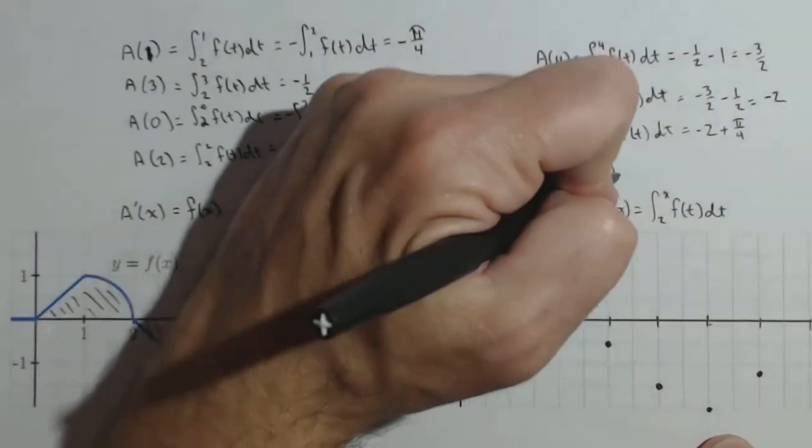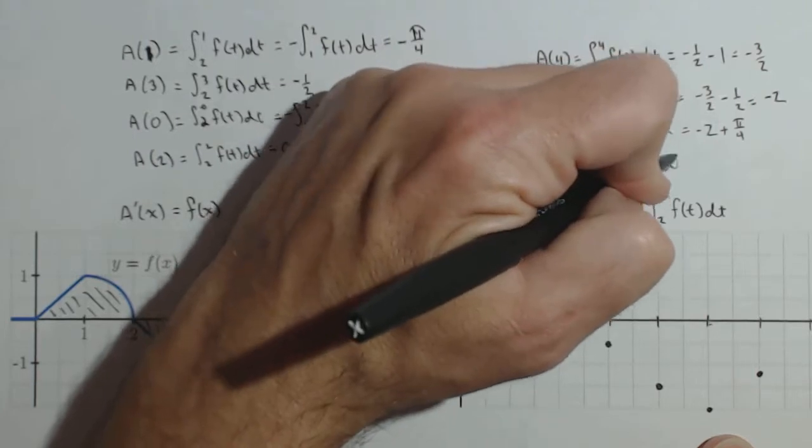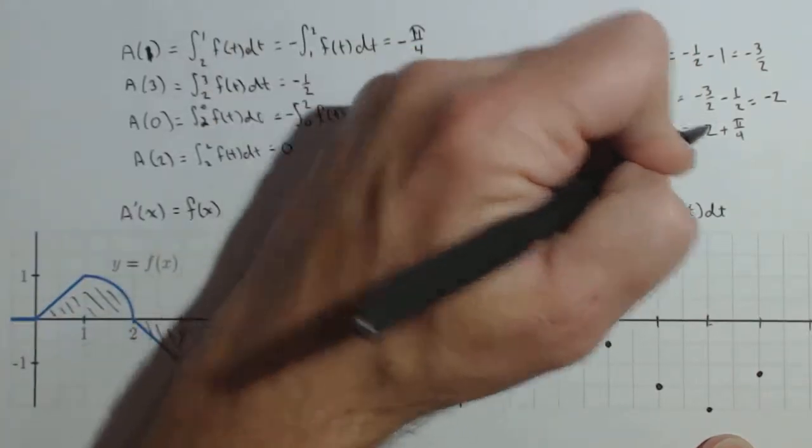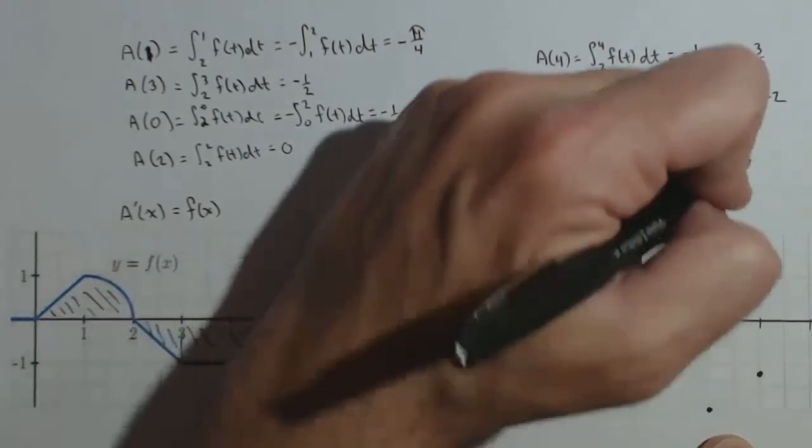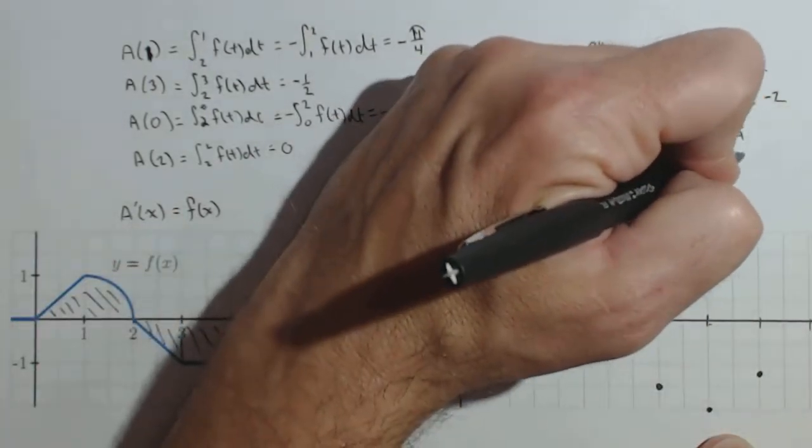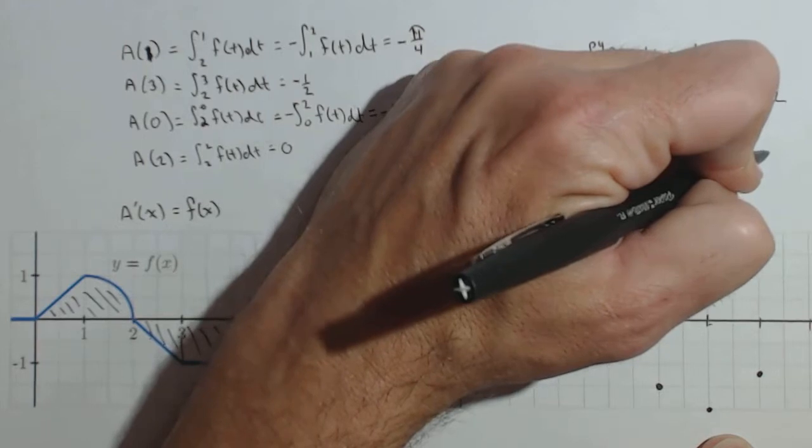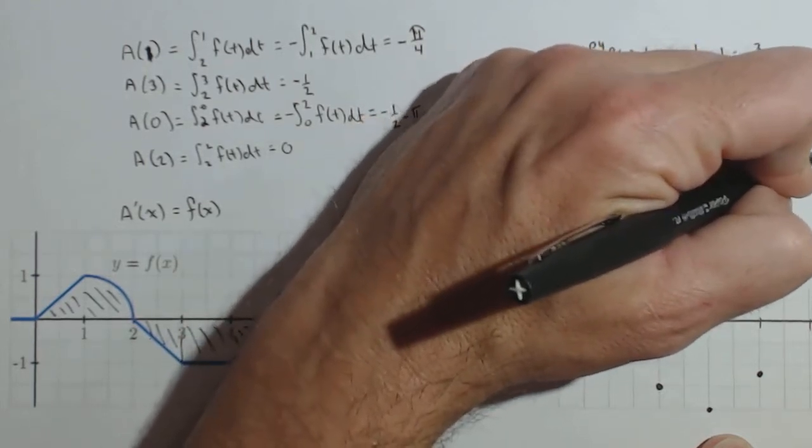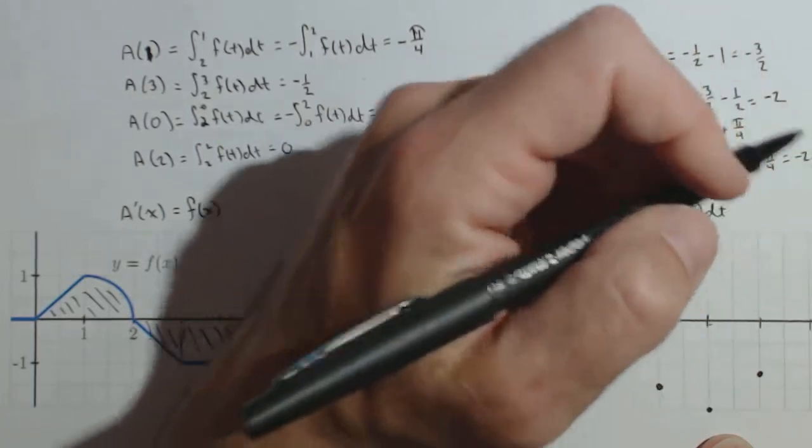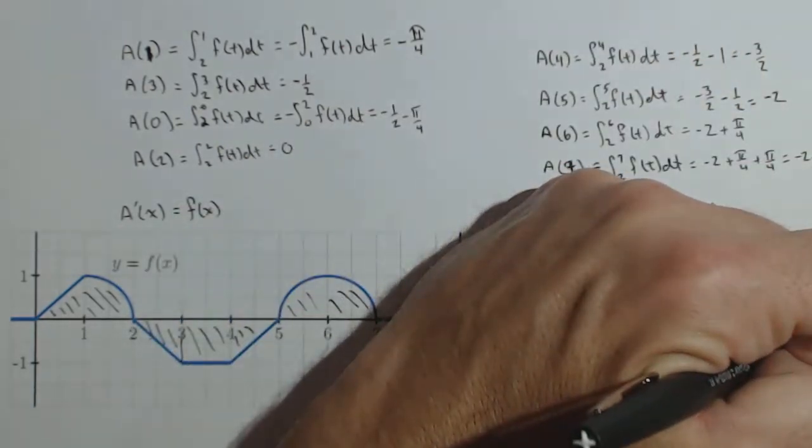Finally, a(7), 2 to 7 of f(t)dt equals, we're going to accumulate another pi over 4. So negative 2 plus pi over 4 plus pi over 4, or negative 2 plus pi over 2, which is just slightly on the negative side here at 7.